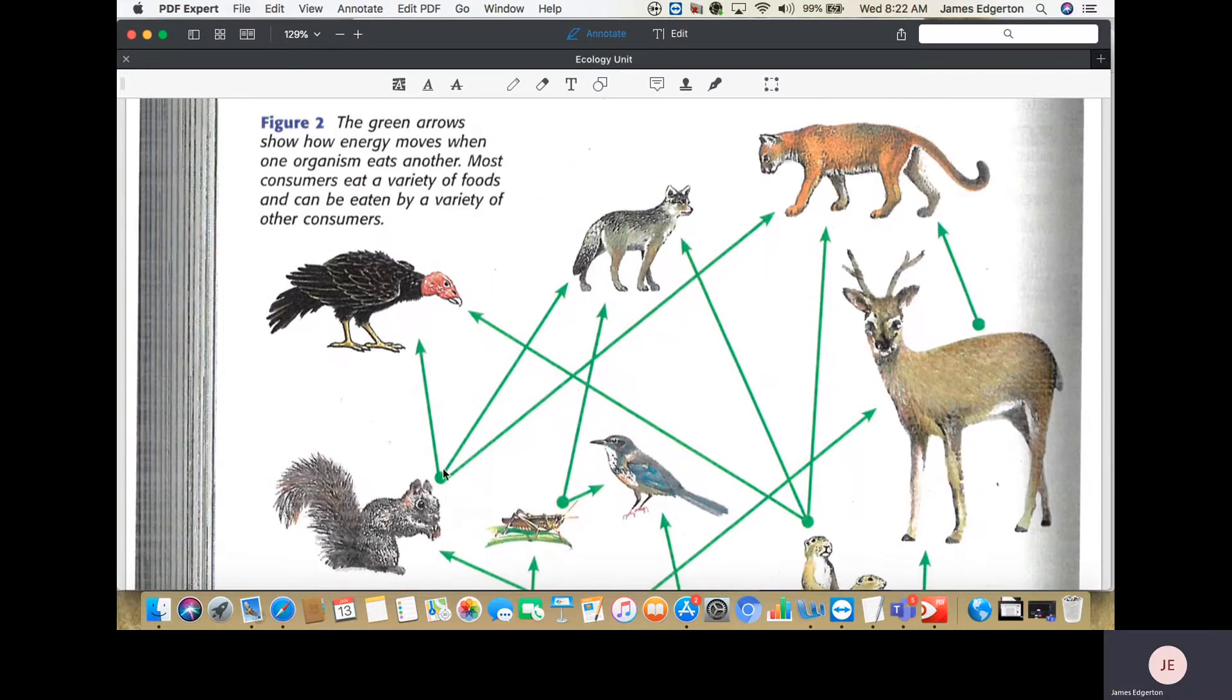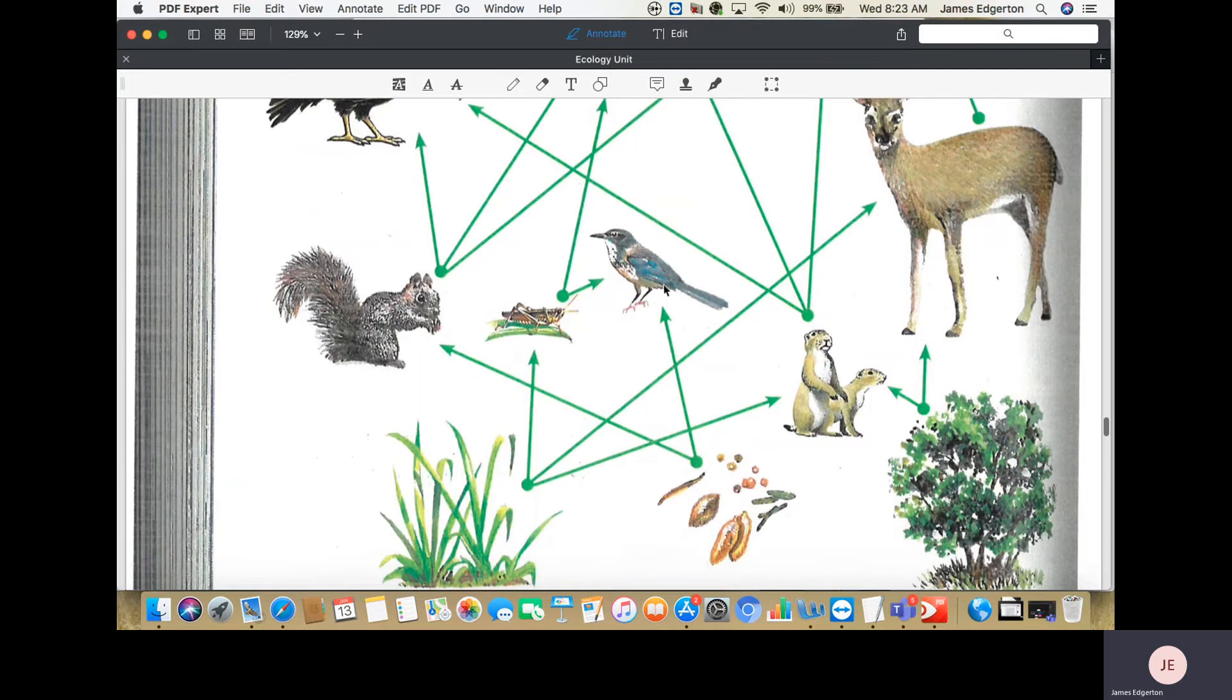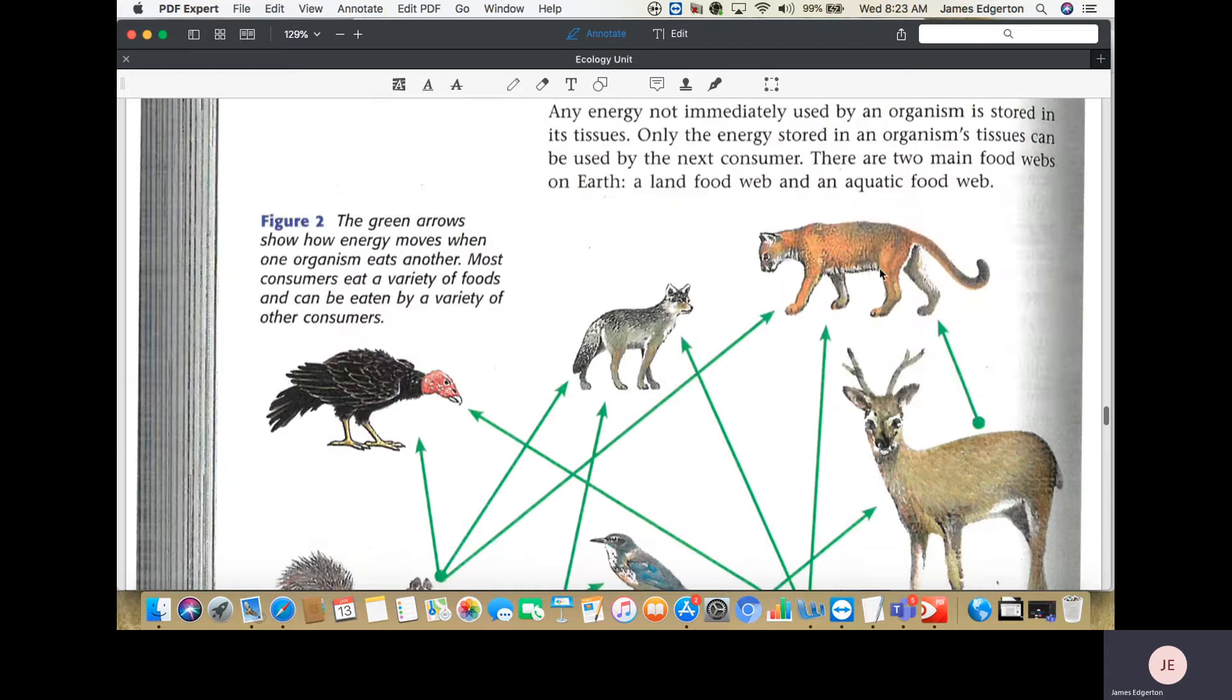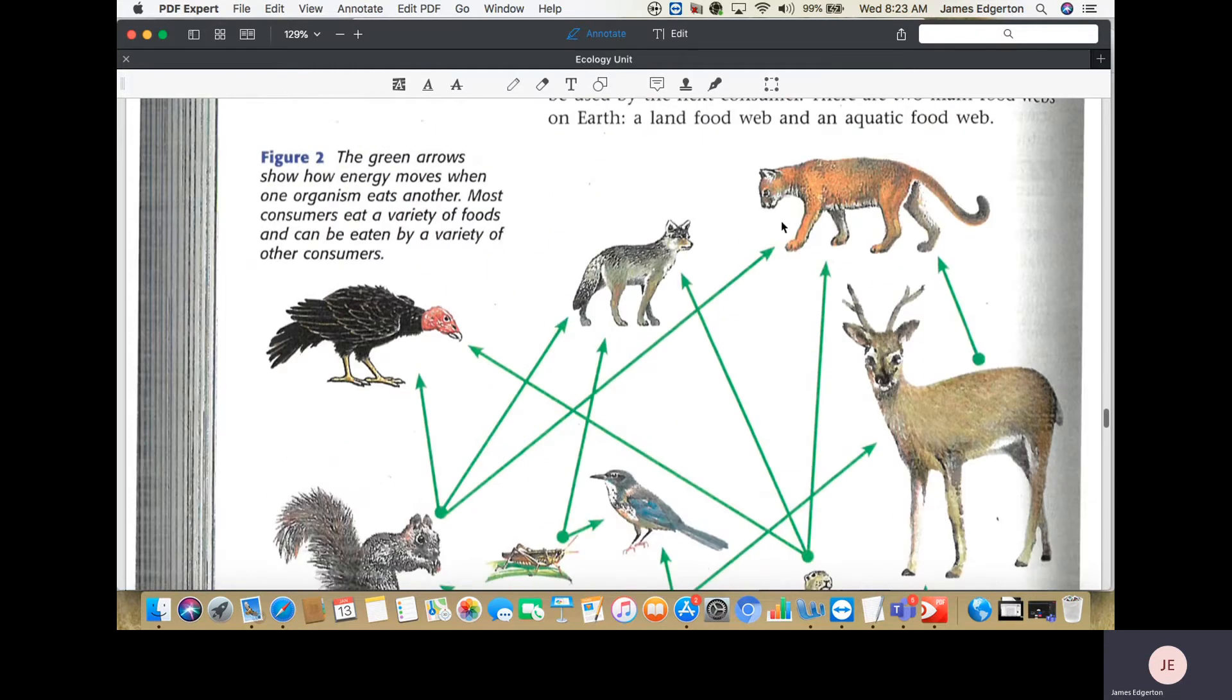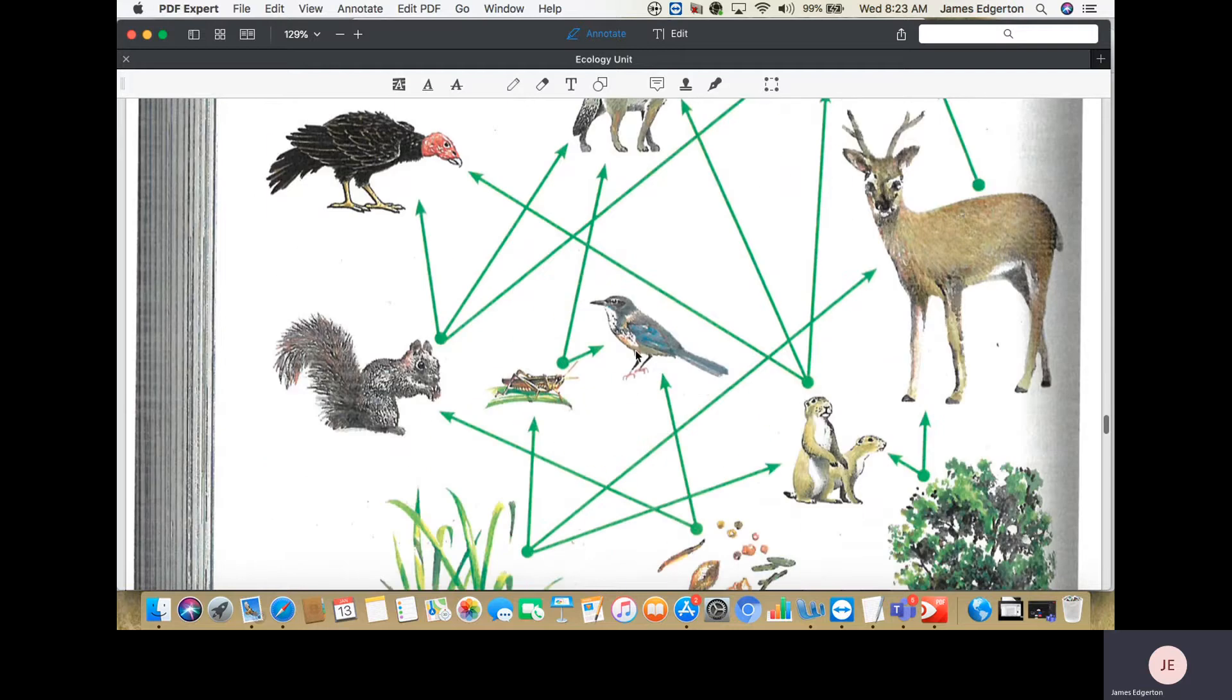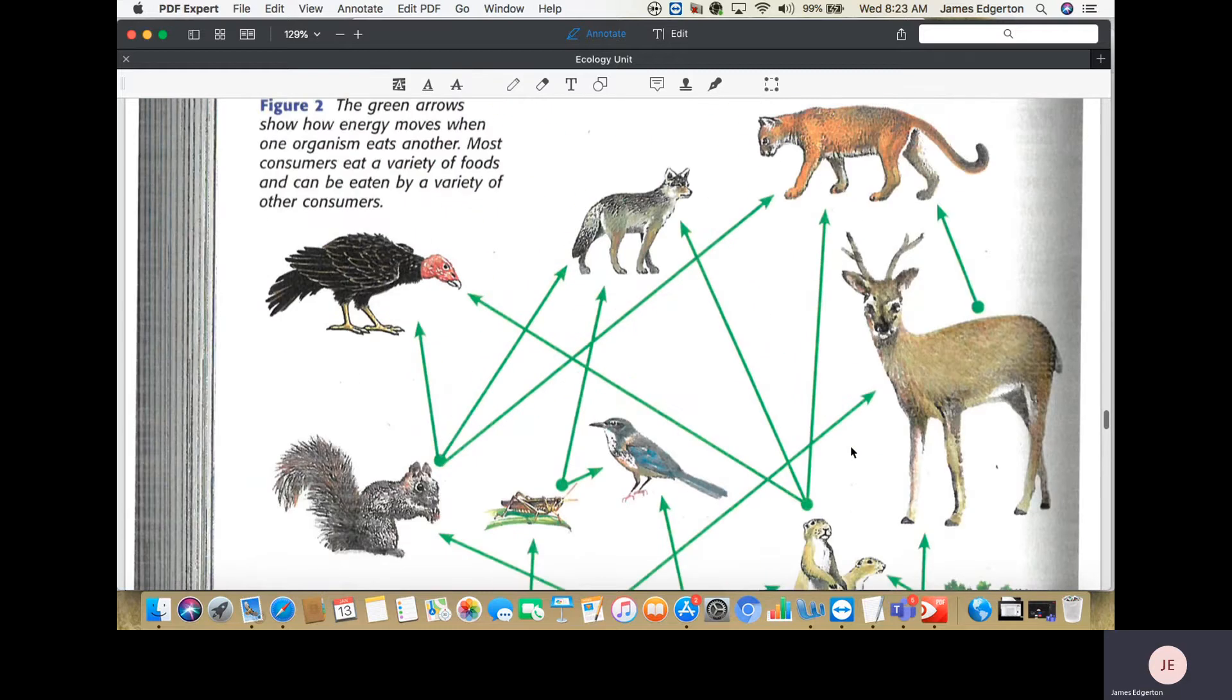Coyote can eat the squirrel, coyote can also eat all different types of things, but as you get over here to the lion, the lion, well, it can go after a lot of different types of foods too, so I guess it's not 100% true, but there becomes less and less types of creatures towards the top of the food chain. Here, there's a lot more different types of first-level producers than when you get towards the top, the apex predators at the top. There's a lot less of those versus there's multiple, multiple different types of first-level consumers versus the predators at the top.